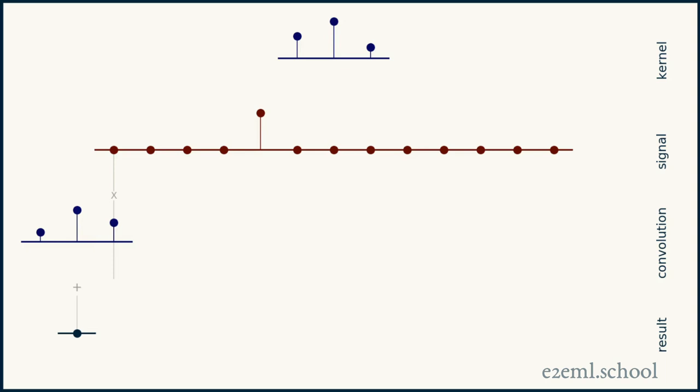We can also do convolution on one-dimensional signals. For instance, audio, stock prices, anything that can be ordered along a single line. Often any data that's organized by time fits on a nice one-dimensional line. It could also be applied, for instance, to three-dimensional signals, say video, where you have both the x and y position of a pixel and its position in time.